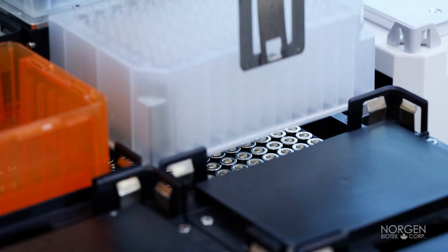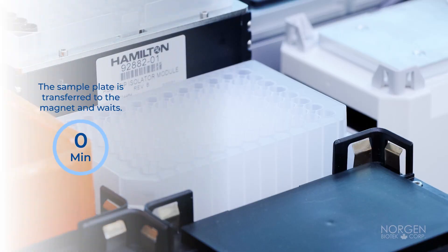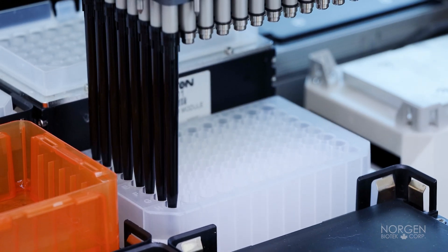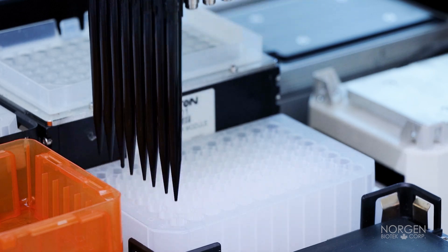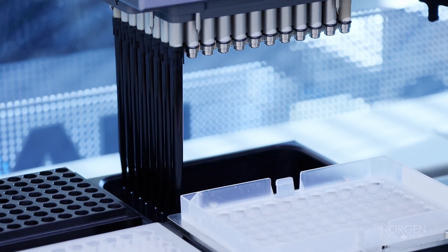The sample plate is transferred to the magnet and waits for 2 minutes for the magnetic beads to form a pellet. The supernatant is removed from the sample plate without disturbing the magnetic bead pellet, and deposited into the gravity waste.